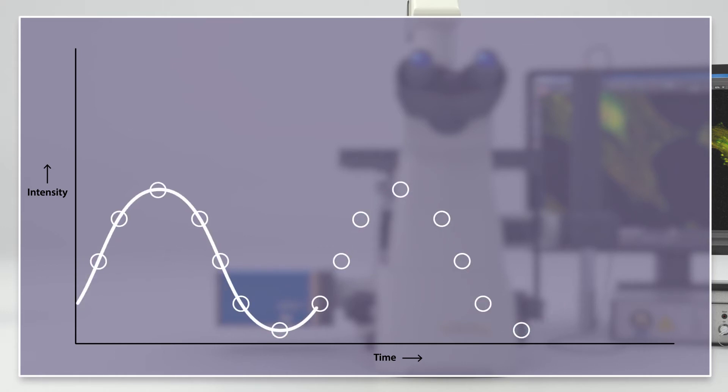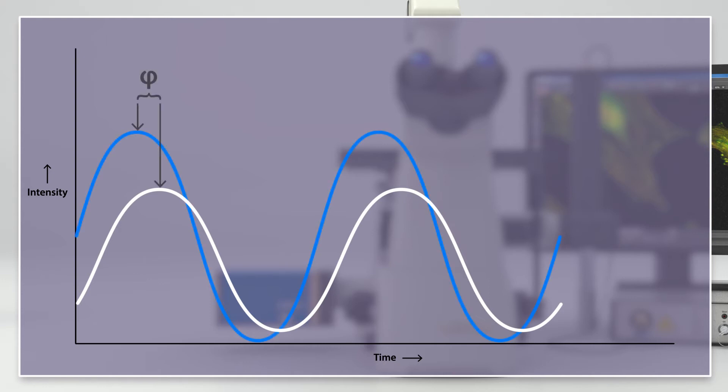Finally, a sine curve is fitted into the measured values in the images I1 to I4 for each pixel. This sine curve provides the phase angle phi, the amplitude A-emission, and the constant component B-emission, which are used to determine the corresponding fluorescence lifetime values.